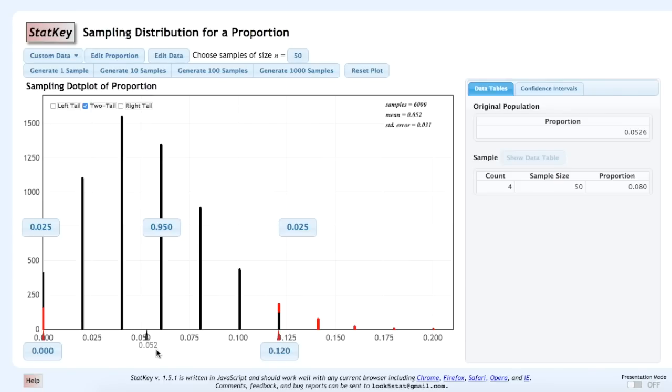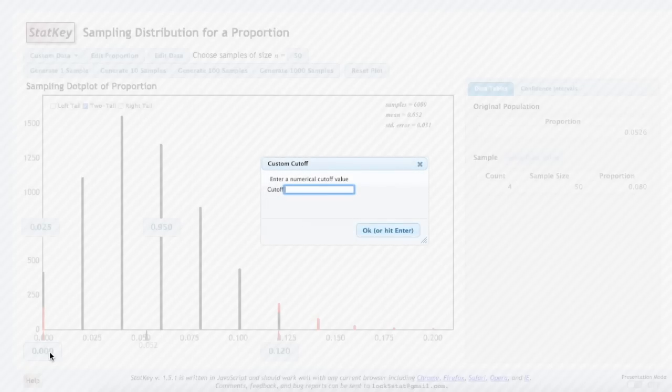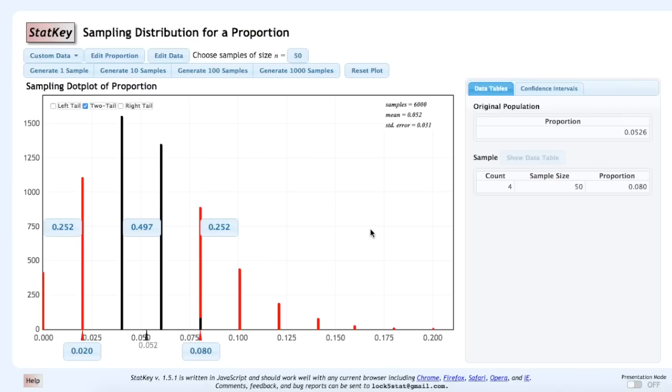So, recall, our sample proportion was 0.02. That would fall to the left of the mean. So, we can select this box here to the left of the mean, and we'll set this cutoff value to 0.02. What that will do is, in red, it will shade in all of the sample proportions that are more extremely different from the population proportion than the one that we observed.